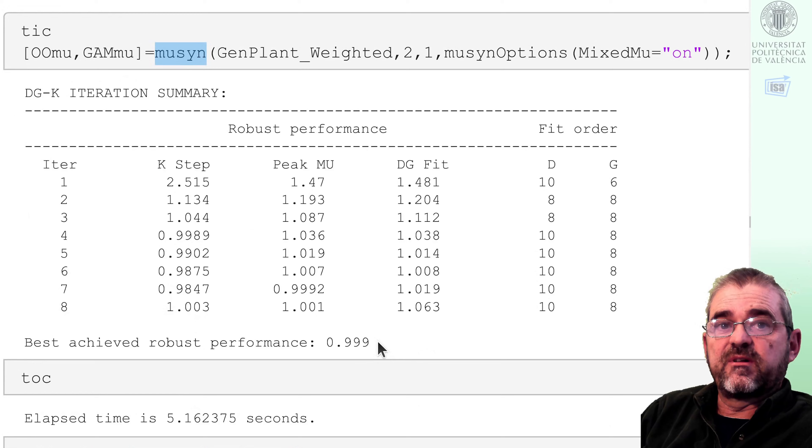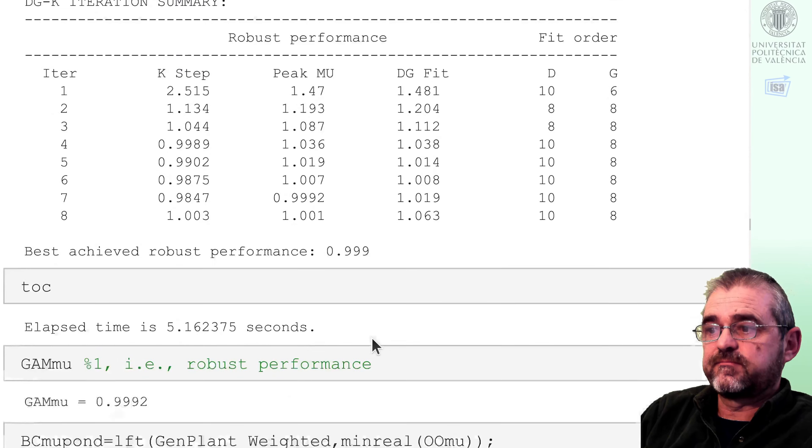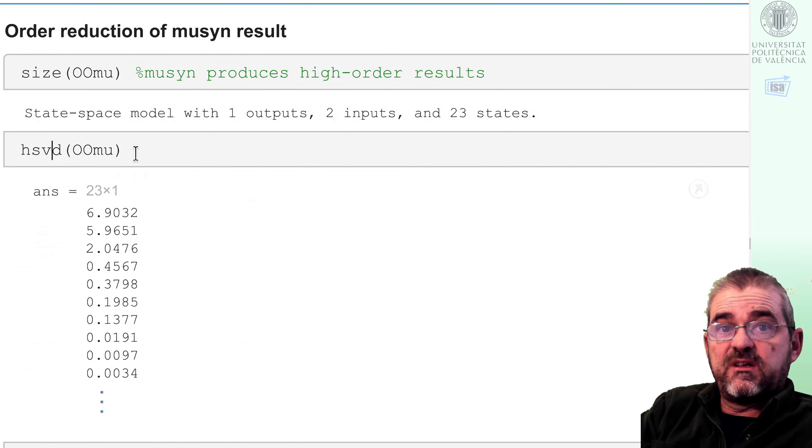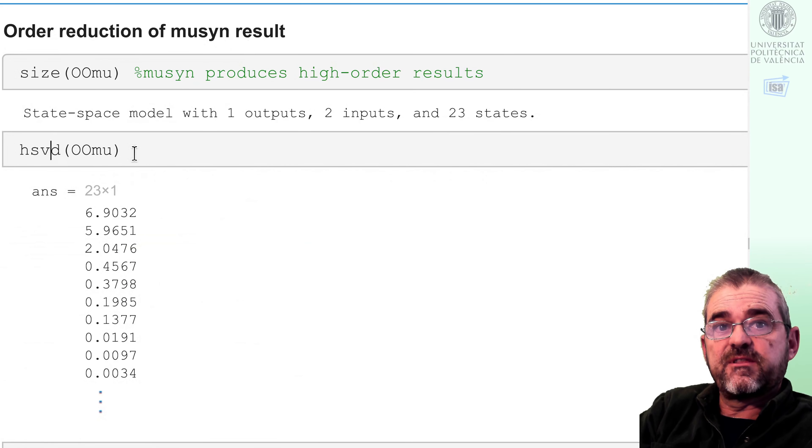On the contrary, mu synthesis did achieve robust performance because the worst-case gain considering modeling errors was below 1. But mu synthesis spitted an observer of order 23 and that's deemed too large an order, so we will start by reducing the order to something more manageable with an acceptable performance loss in terms of worst-case gain.